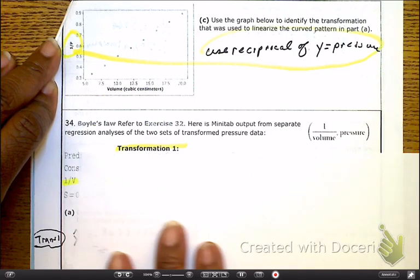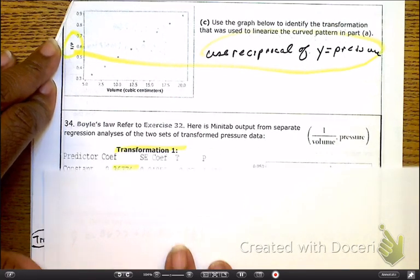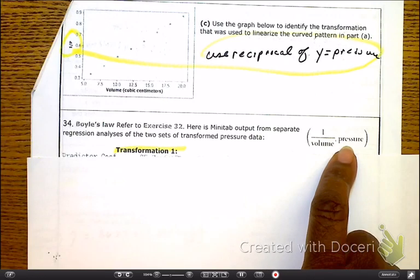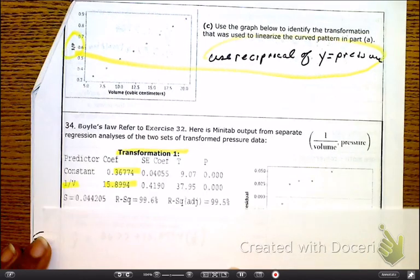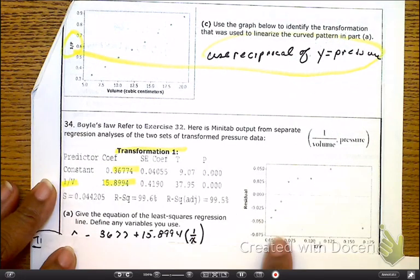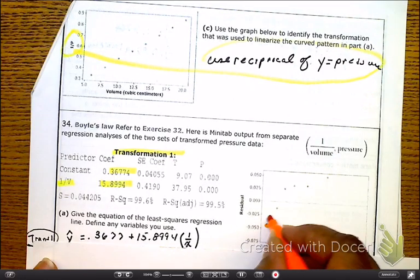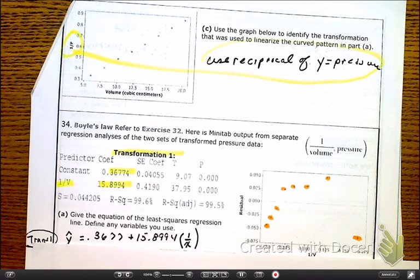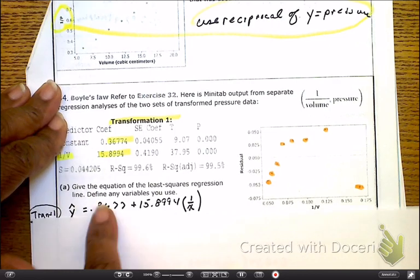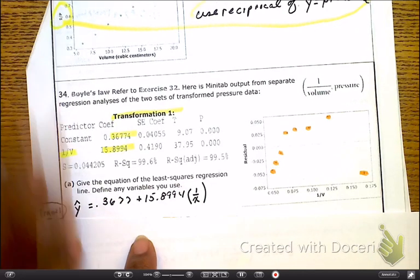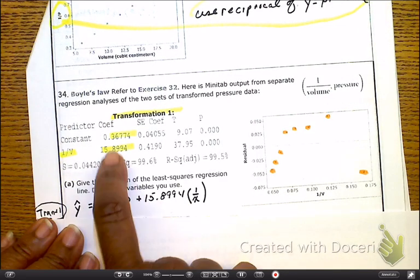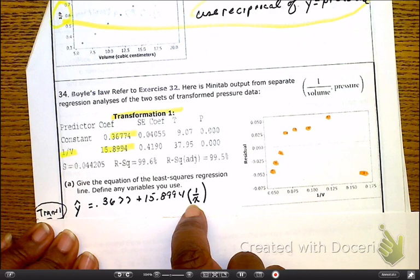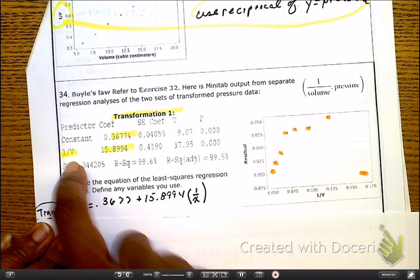Let's continue looking at number 34. Transformation 1 is 1 over the volume versus pressure. That's your x and that's your y, which we said was applicable on the drawing. Here is your output, here is your residual. They say give the equation. I've got my slope, I've got my y-intercept, but here's the difference. They are claiming that our value for x is going to be represented as 1 over x.